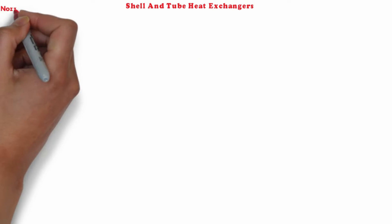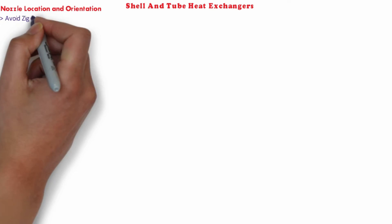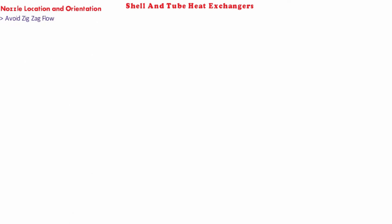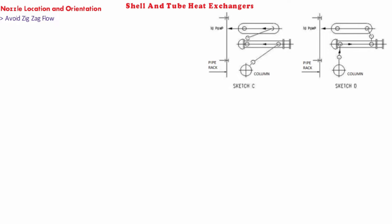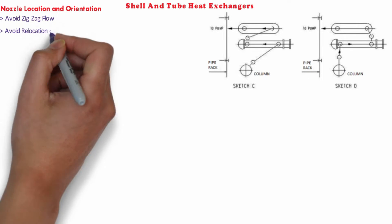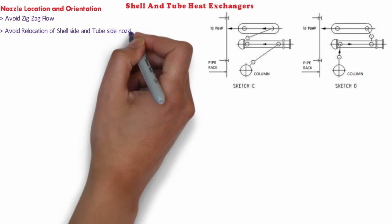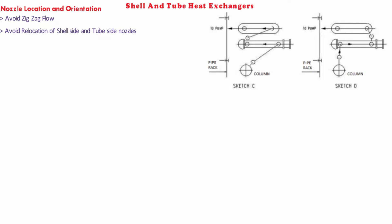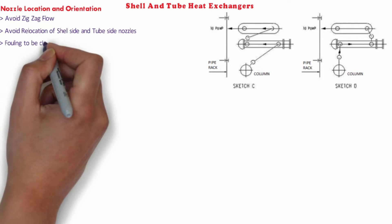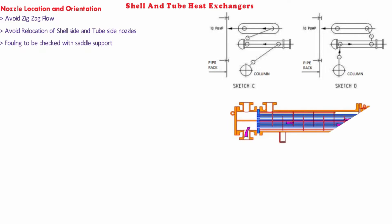The general points which should be taken care of while deciding nozzle locations are: avoid zigzag flow pattern as shown in the figure. Relocation of shell side and tube side nozzles can be requested in extreme cases only if it results in considerable cost savings. Bottom nozzle near the saddle support and its connected piping should be checked for possible fouling with the saddle supports or exchanger foundation.